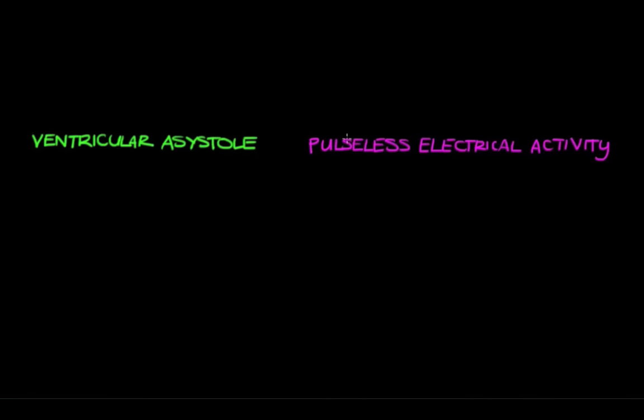Ventricular asystole and pulseless electrical activity are two types of cardiac arrest, meaning the heart has stopped. In both of these, the patient doesn't have a pulse, meaning that they're not pumping blood to the rest of the body. And that's why both of these conditions are absolutely fatal unless they're corrected immediately.